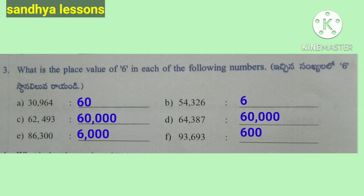Place value of 6 in 62,493: 6 is in the ten-thousands place, so 6 × 10,000 = 60,000. Place value of 6 in 64,387: 6 is in the ten-thousands place, so place value is 60,000. Place value of 6 in 86,300: 6 is in the thousands place, so place value is 6,000. Place value of 6 in 93,693: 6 is in the hundreds place, so place value is 600.